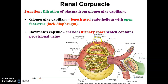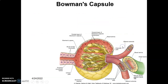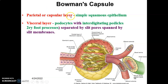The basal lamina of the glomerulus is visible here. Bowman's capsule is covered by an inner visceral layer formed by the podocytes, and an outer parietal layer. The fenestrated capillaries have open fenestrae lacking a diaphragm, and you have foot processes of podocytes around the basement membrane of the capillaries. The outer parietal or capsular layer has simple squamous epithelium, and the inner visceral layer has podocytes with interdigitating pedicels — foot processes — separated by slit pores spanned by slit membranes.